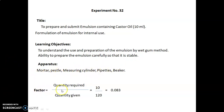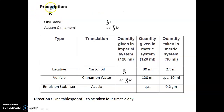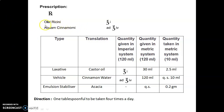The factor is calculated as quantity required upon quantity given: 10 upon 120, equal to 0.083. The prescription formula is given in Latin terminology in the imperial system, which we need to convert to the metric system. 'Ol. Ricini' means castor oil, quantity ounce I.